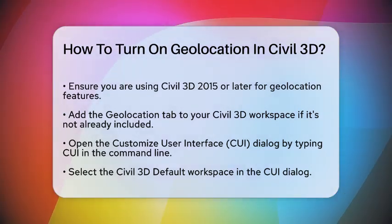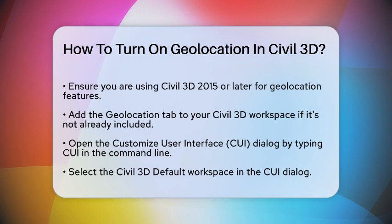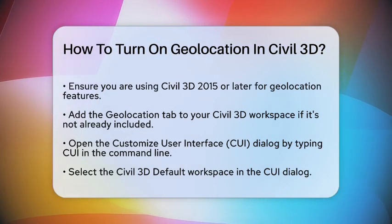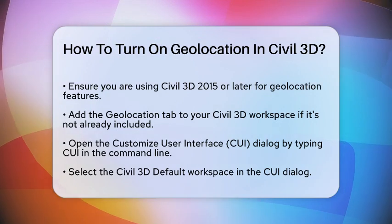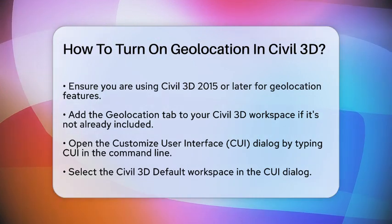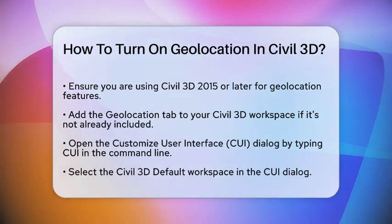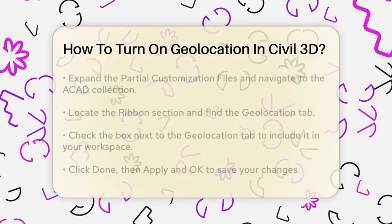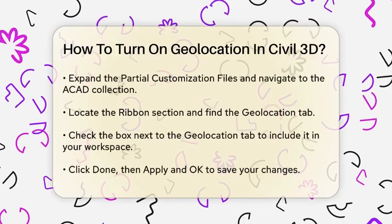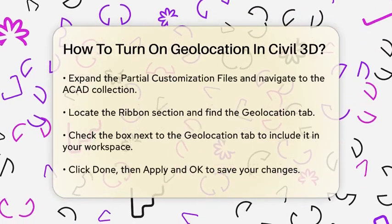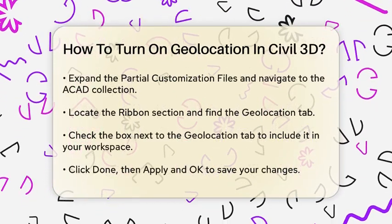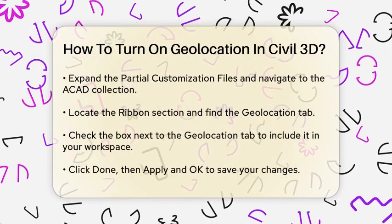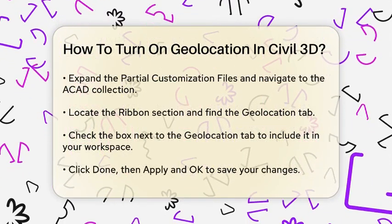To start, you might need to add the Geolocation tab to your Civil 3D workspace. By default, this tab is not included in the Civil 3D workspace, so you'll need to do some customization. Open your Civil 3D drawing and go to the Customize User Interface (CUI) dialog box by typing CUI in the command line.